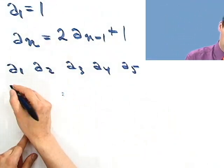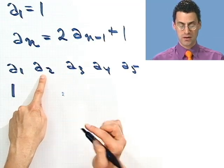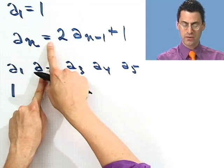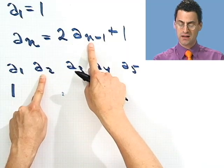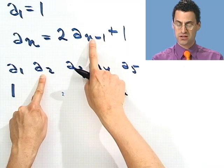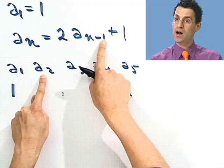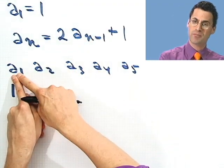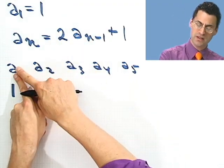So a₁ is 1, we were told that. Now how do I find a₂? Well, a₂ would equal 2 times a, and what subscript is this? 2 minus 1 is 1. So it's just the previous number, 2 times the previous number plus 1.